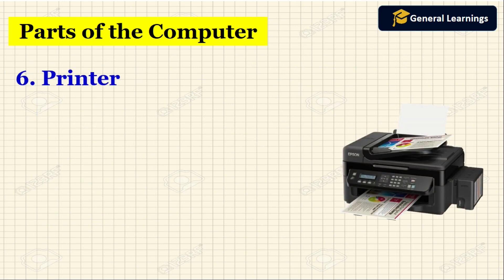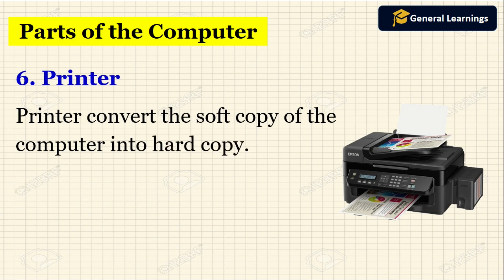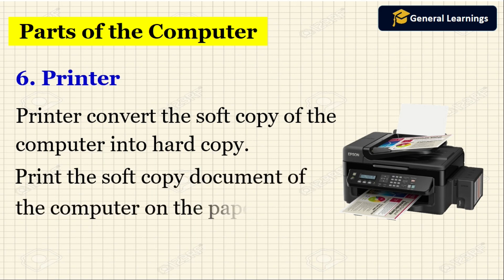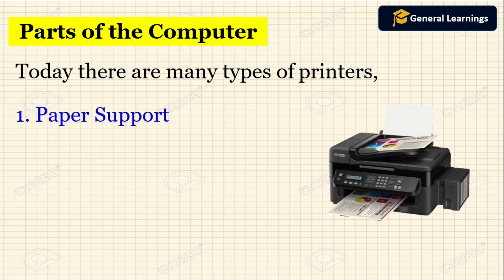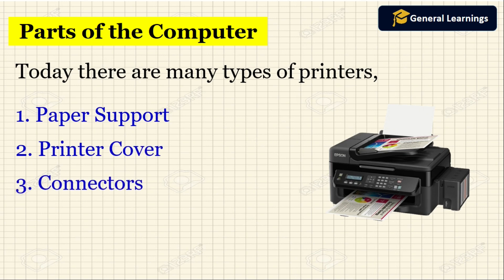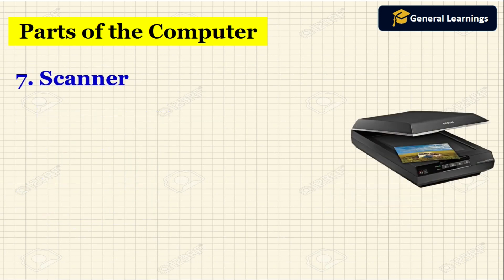Now we are going to see about the printer. A printer converts the soft copy of a computer document into hard copy — it prints the document on paper and can be used for future purposes. The parts of a printer include: paper support, printer cover, connectors, and output tray.